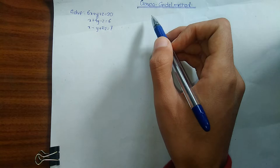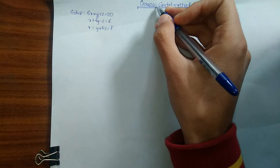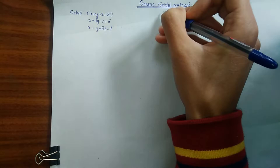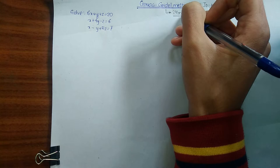Before seeing how to solve using the Gauss-Seidel method, I recommend you first watch the video on the Jacobi method, whose link is in the description box below. The condition for Gauss-Seidel method is the same as the Jacobi method — they are quite similar to each other. The only difference is that the Gauss-Seidel method is two times faster than the Jacobi method.